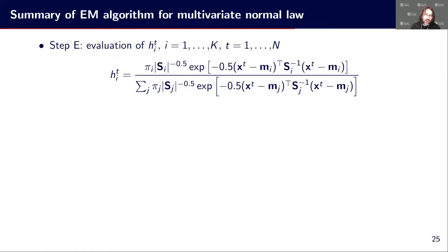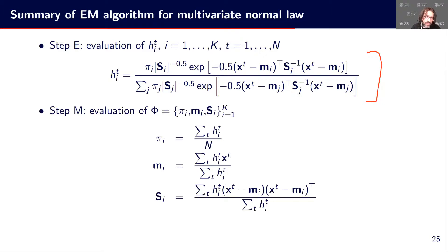With the multivariate normal law, we apply the computation of the partial derivative according to each parameter of the underlying density function for each group. In the E-step, we evaluate H_it by plugging in the equation of the multivariate normal law, with simplifications since everything is equal at the numerator and denominator, giving the final estimate of H_it. In the M-step, we evaluate the parameterization — the prior pi_i, the mean vector m_i, and the covariance matrix S_i — for all groups from 1 to k.